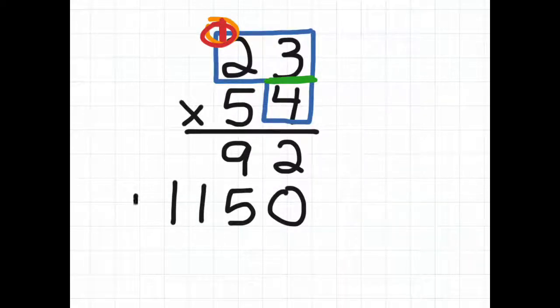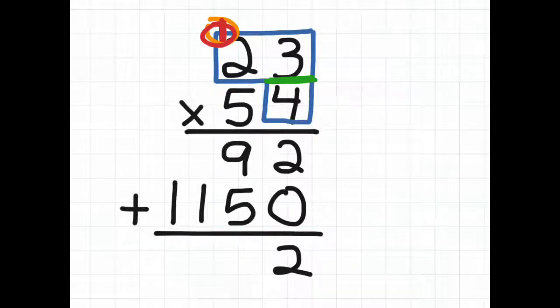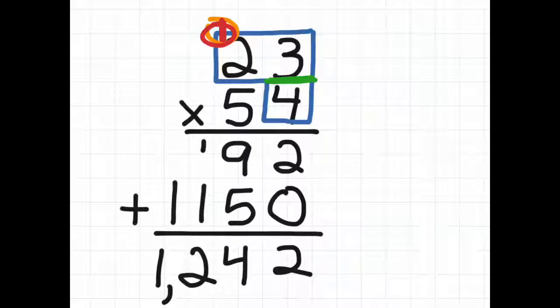Our next step is just to add our partial products up and we get 2. 9 plus 5 is 14. Carry our 1 into the next place value column. 1 plus 1 is 2 and 1 is 1. So our answer is 1,242.